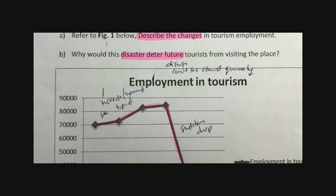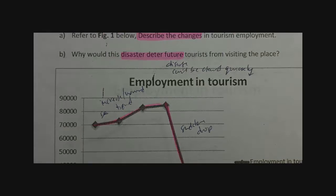For question 1b, the highlight of this question is: why would this disaster deter future tourists? Your answer must focus on the impact of this particular type of disaster, which is a hurricane and the subsequent flooding, and why it will indirectly affect tourists from returning immediately after it.